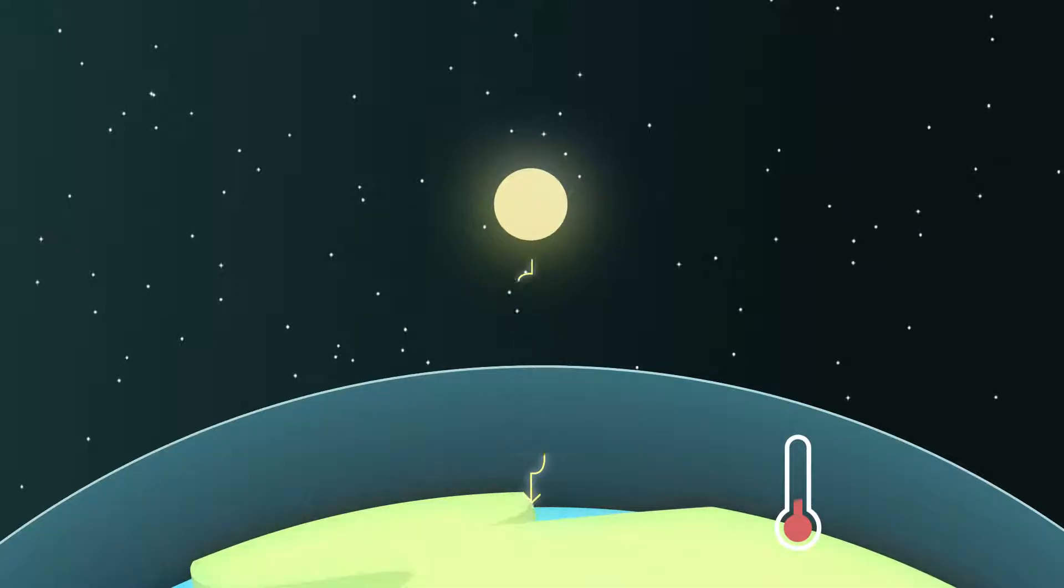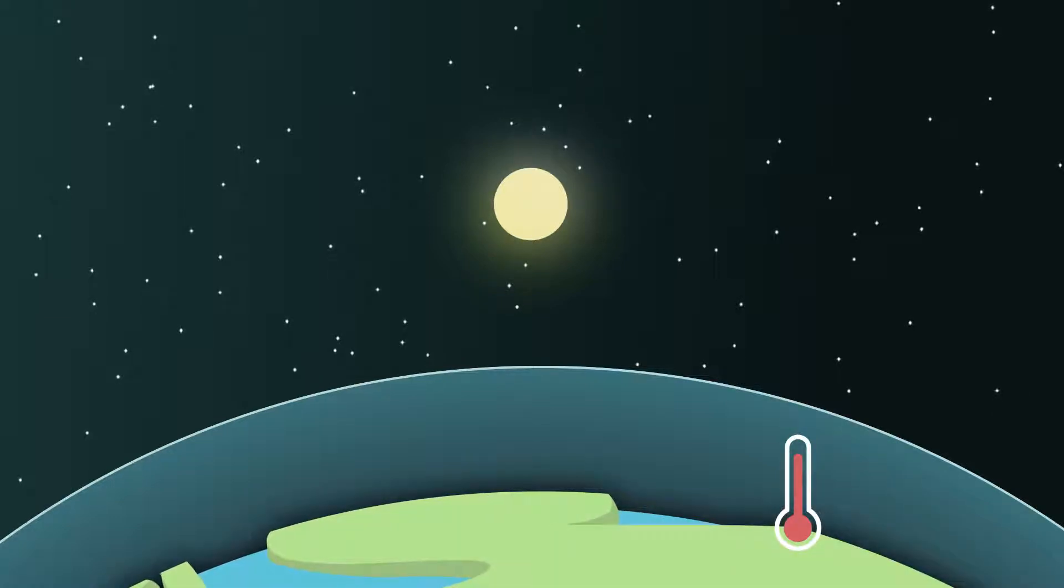The visible light gets straight through our transparent atmosphere and is partly absorbed by the earth which gets hot. Now hot things radiate infrared rays.